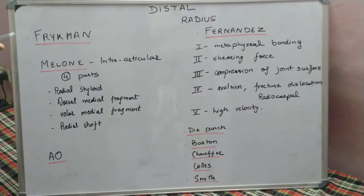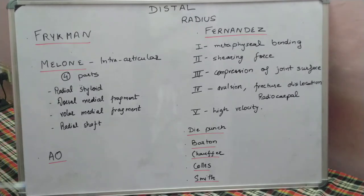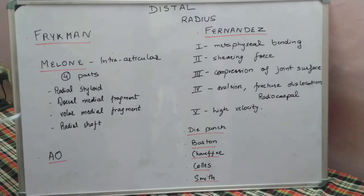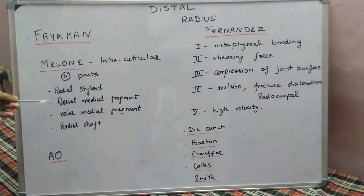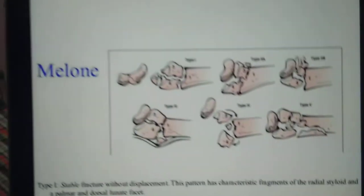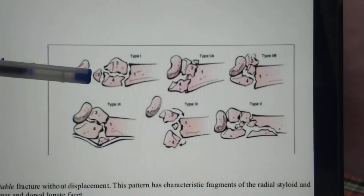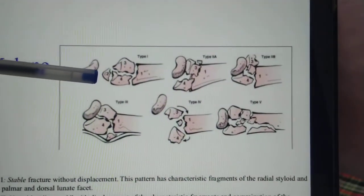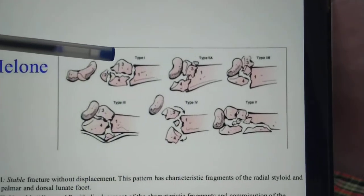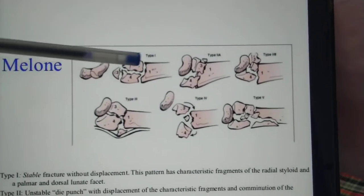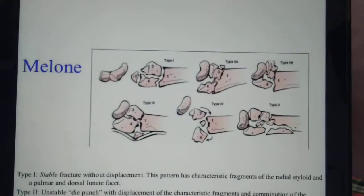The second classification is the Meloni classification, which classifies only intra-articular fractures. It defines four parts of the distal radius: the lateral part, which is the radial styloid; two medial parts — one dorsal and one volar; and the radial shaft part. Every intra-articular fracture involves these four fragments.